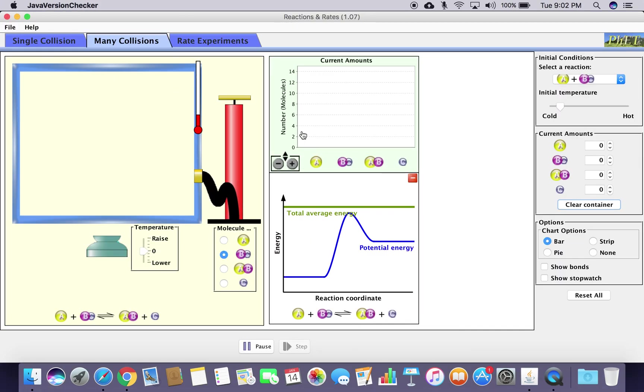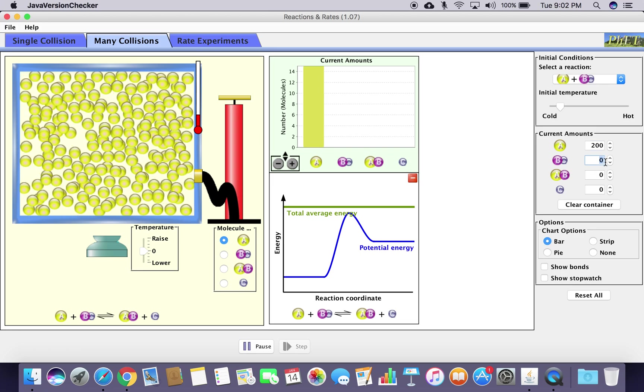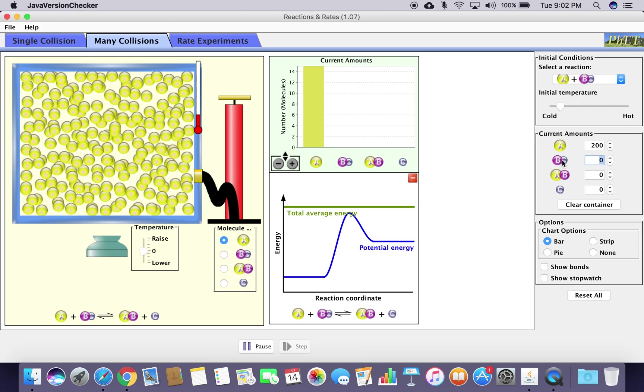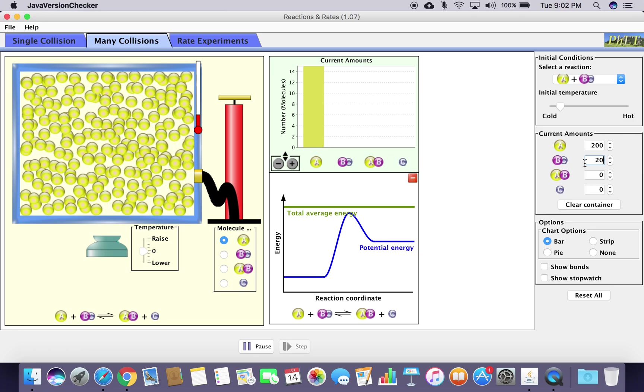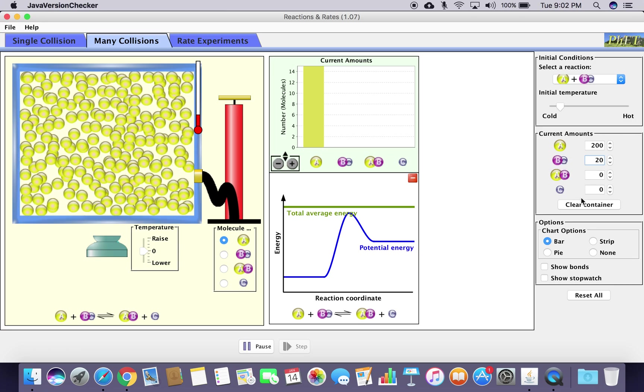We're going to take the number of molecules of this single atom A and there's a diatomic molecule B and C bonded together. We're going to start off with a boatload of A at 200, that's the maximum under the many collisions tab. We're going to set BC, the diatomic species, to 20.